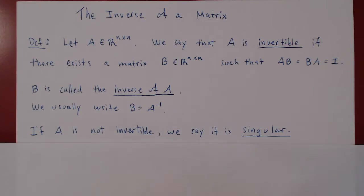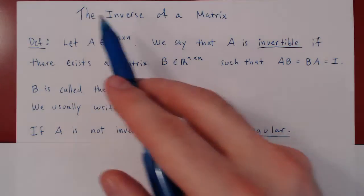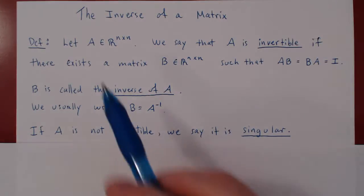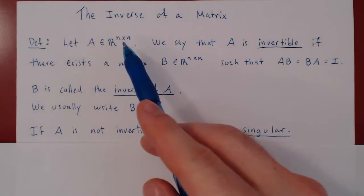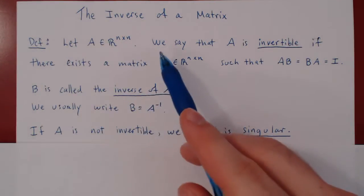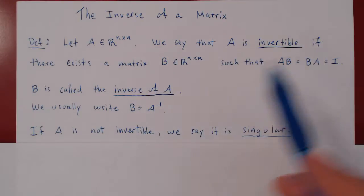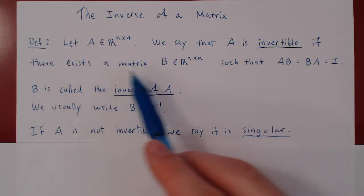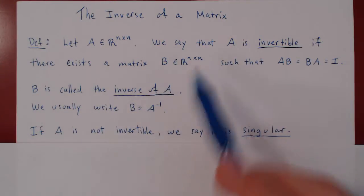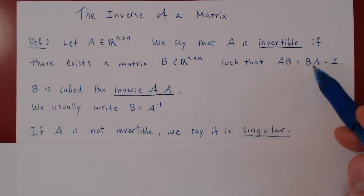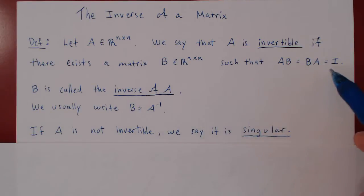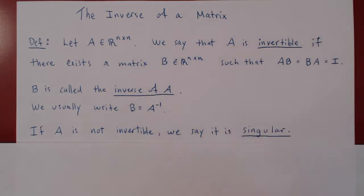In this video we will discuss the inverse of a matrix. We take a square matrix A, and we say that A is invertible if there exists a square matrix B of the same size such that A times B equals B times A equals I, the identity matrix of the same size.